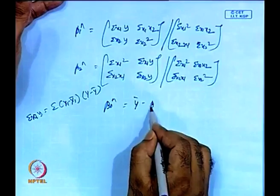Then add columns: x1·y, x1·x2, x1², x2², and x2·y. Take the summation of all these columns. Once you have the final matrix and solve it, you get beta 1 hat and beta 2 hat. Then beta 0 hat = y bar − beta 1 hat·x1 bar − beta 2 hat·x2 bar.